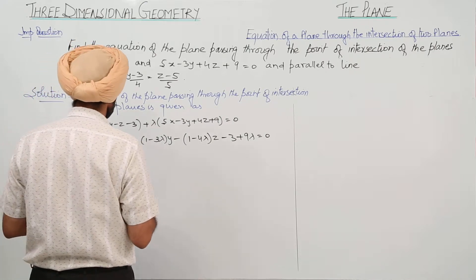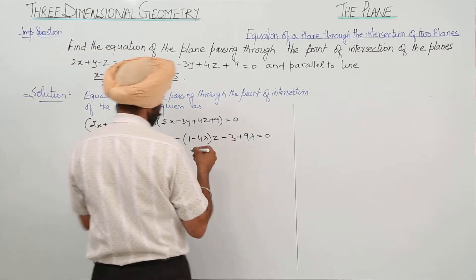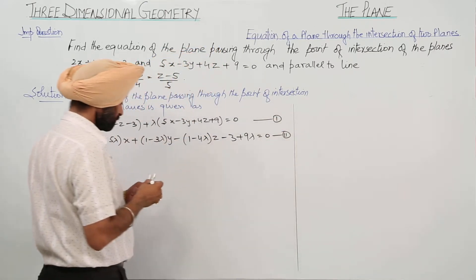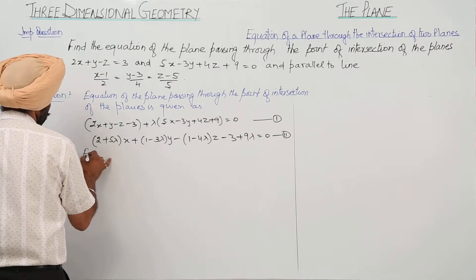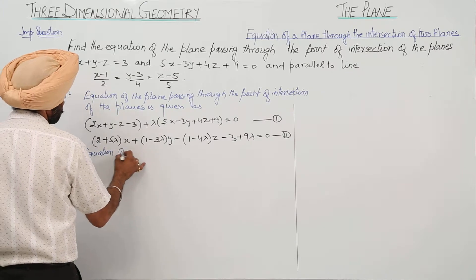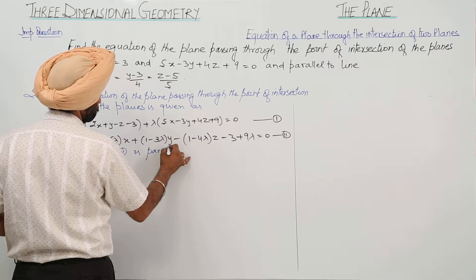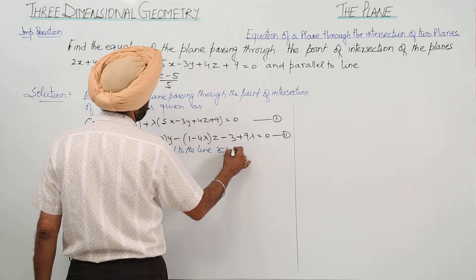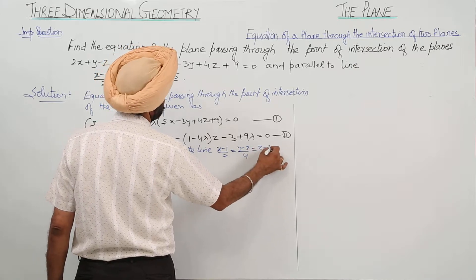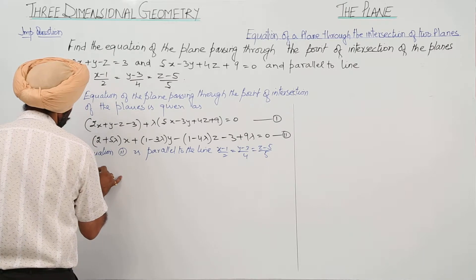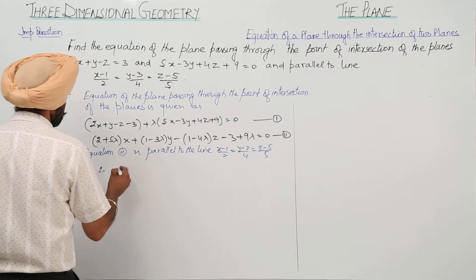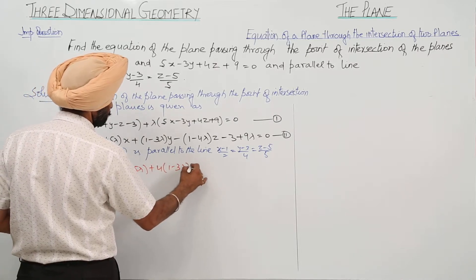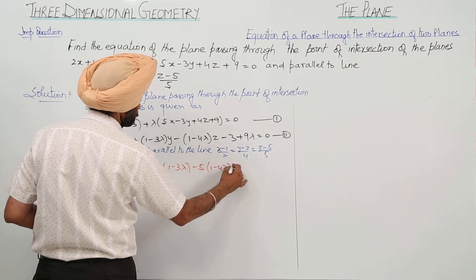Let this be equation 1, let this be equation 2. Now, equation 2 is parallel to the line (x - 1)/2 = (y - 3)/4 = (z - 5)/5. Therefore, 2(2 + 5λ) + 4(1 - 3λ) - 5(1 - 4λ) = 0.